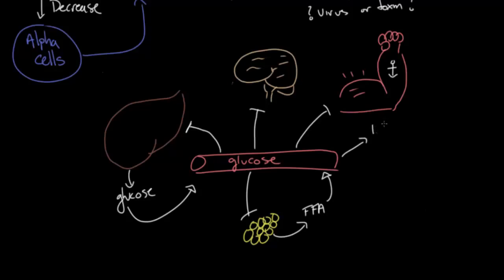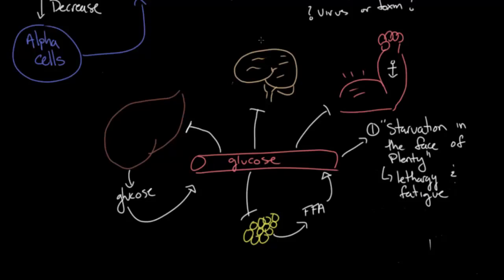And the first one is what I'll call starvation in the face of plenty. And by this I mean the body almost acts like it's starving, even though it has all of this glucose present in the blood. And this results in symptoms like lethargy and fatigue, because it's trying to maintain the little glucose it thinks it has for the brain and the other organs that are vital and really need it. So someone with diabetes will be lethargic and fatigued.